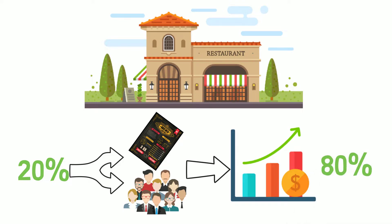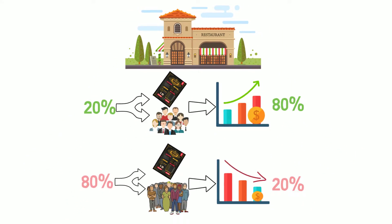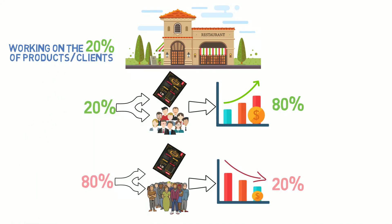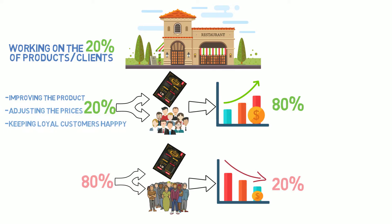How can we improve our productivity and efficiency by applying the 80-20 rule? We have two ways to improve our productivity. On the one hand, we can work on improving the 20% of our products that represent 80% of our revenue, and keep the 20% of our clients that represent 80% of our revenue happy. This is far more important than risking losing the other 80%, so we should focus on retaining that 20% and trying to find similar loyal customers.